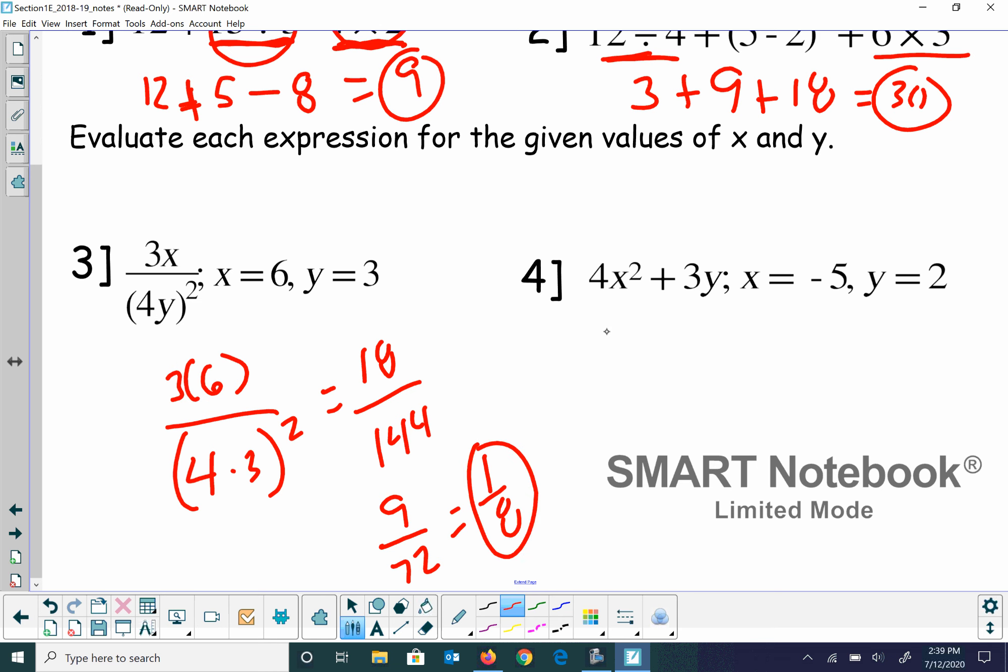I'm not using a calculator, so let's just see if we can reduce this in our heads. 2 goes into both, so I get 9 over 72, which is 1 over 8. Alright, same idea. We're going to substitute in. So I have 4 and then x squared. So I'm going to square this value, so I have negative 5 squared plus 3 times 2. So negative 5 squared is positive 25 plus 6. And that's going to give me 100 plus 6, which is 106.